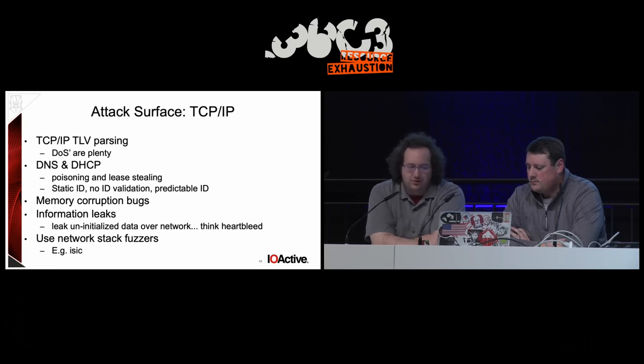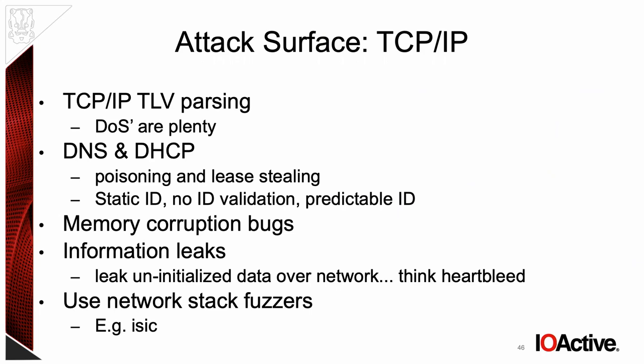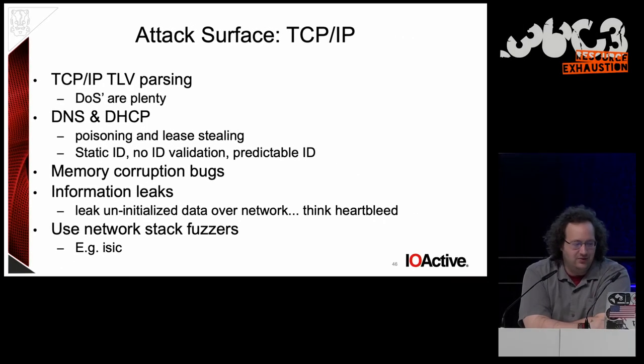Looking at the attack surface for TCP/IP — if you implement your own stack, good luck, because you're going to screw it up. Taking a step back, this is all mostly TLV parsing. If you look at what can go wrong with TLV parsing, there will be out-of-bounds reads pretty much everywhere. For protocols on top like DHCP and DNS, you'll see standard network attacks: lease stealing or cache poisoning if you don't protect your transaction ID. If you have a static ID or generate predictable IDs, you can have poisoning, stealing, and man-in-the-middle attacks. And the thing we really like to see is memory corruption bugs — you take network data, parse it, and if you do it wrong, you may cause memory corruption.